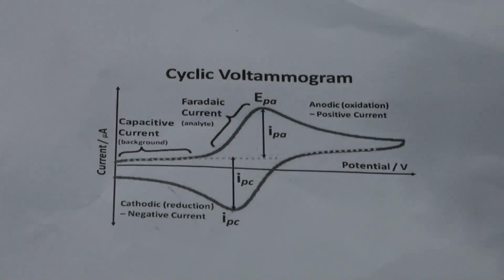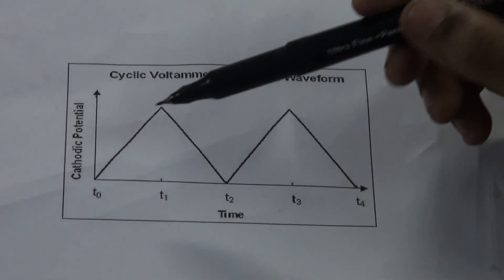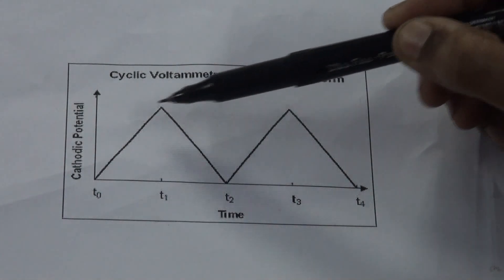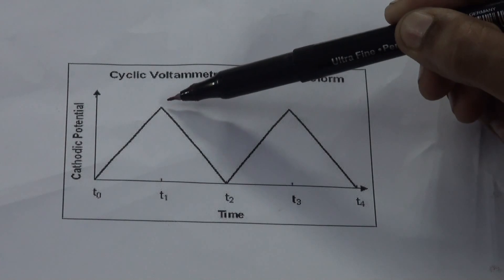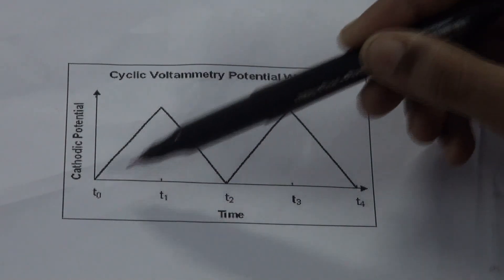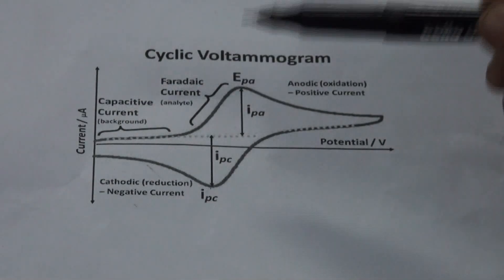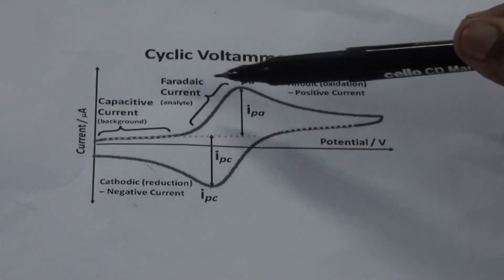On the time scale, we can see that the working potential ramps linearly versus time from V1 to V2, and then the ramp is inverted from V2 to V1, giving a triangular waveform. This is the capacitive current. These are the peak values of the analyte, that is, the faradic current.